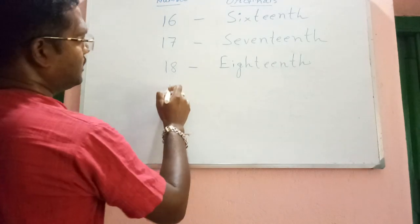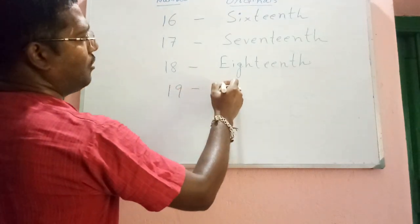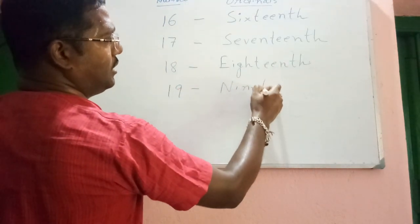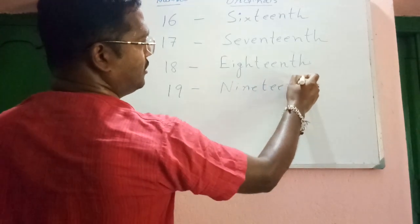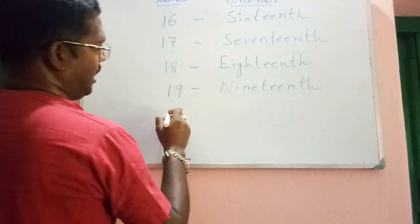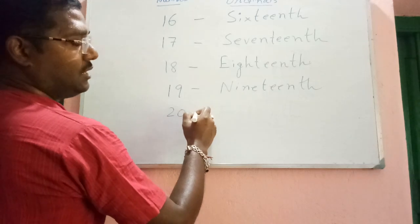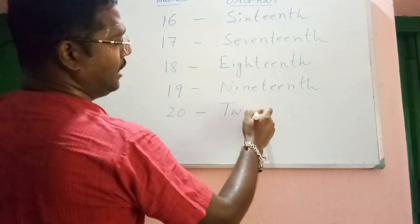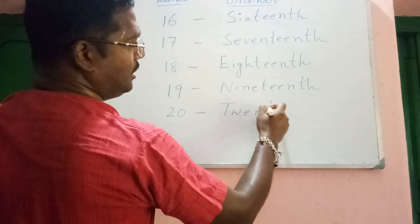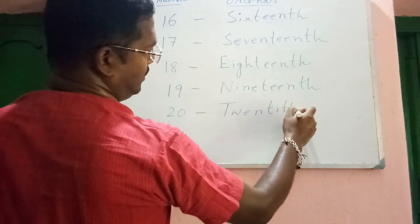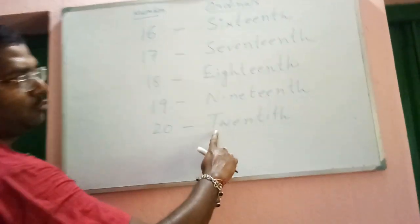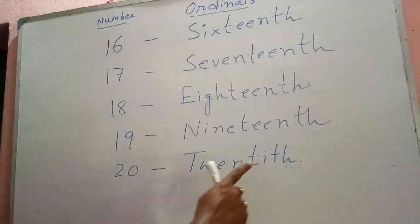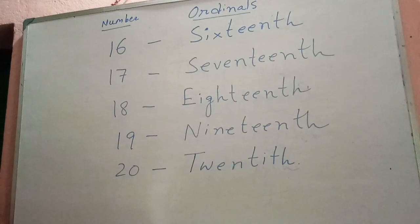Next, number is nineteen and ordinal is nineteenth — N-I-N-E-T-E-E-N-T-H. And last one is twenty and ordinal is twentieth — T-W-E-N-T-I-E-T-H. Memorize this word, this is something difficult — twentieth.